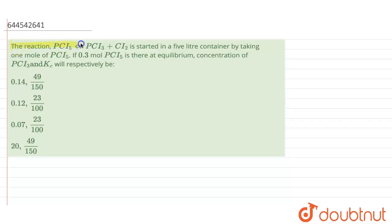It is given that the reaction PCl5 giving PCl3 plus Cl2 started in a five-liter container by taking one mole of PCl5. If 0.3 mole of PCl5 is there in equilibrium, the concentration of PCl3 and Kc will be respectively.